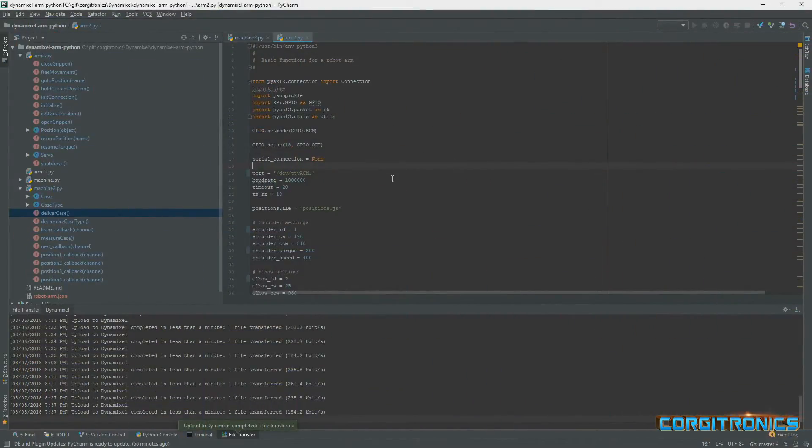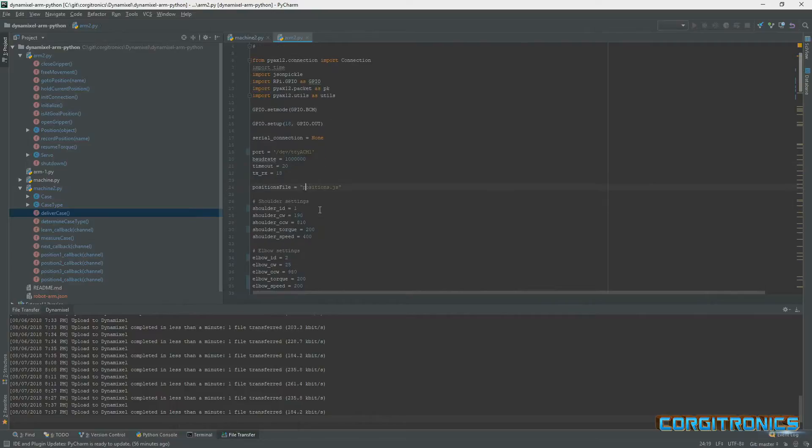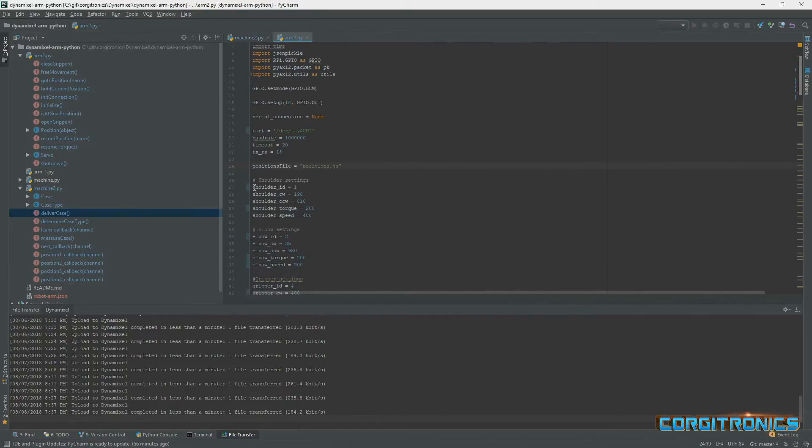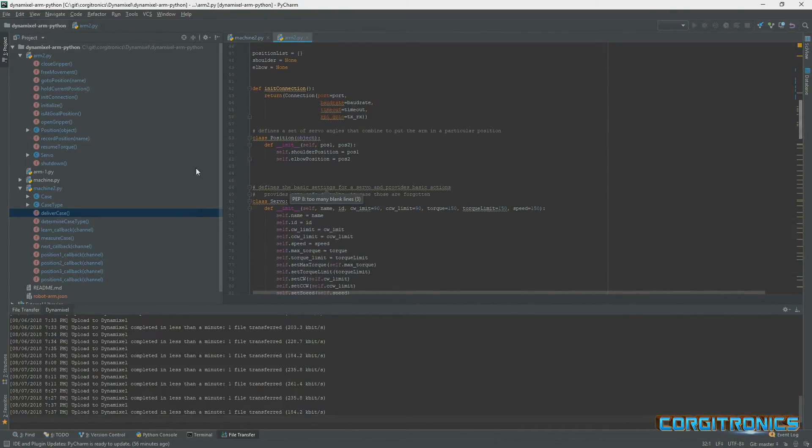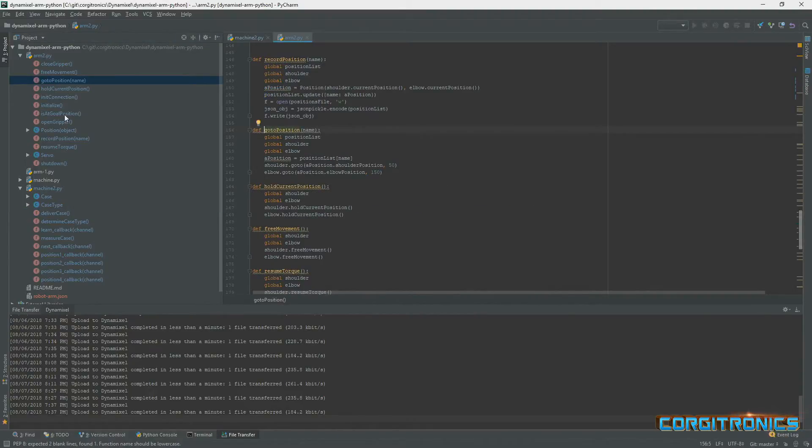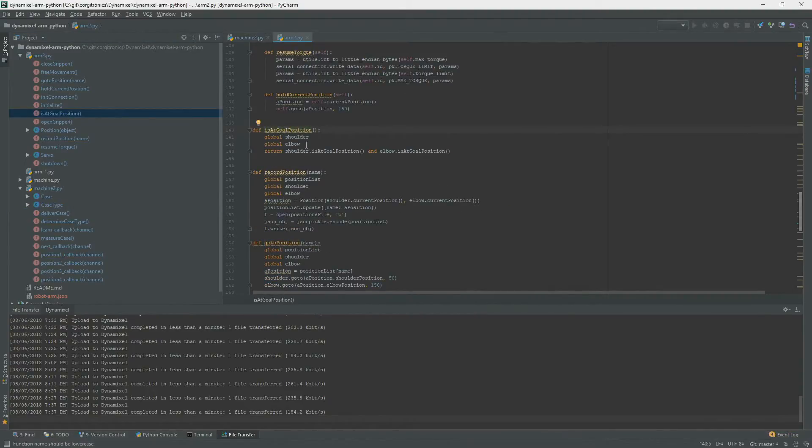I don't know if the source code is going to come through, but I created a class for the arm, and it has a variety of little parameters for the servos for each joint. What Dynamixel servo it is, one, two, three, et cetera, torque levels that should be used, position limits, and things like that. And then implemented a small set of functions like go to position, or is it at a goal position? Is it where it's supposed to be?